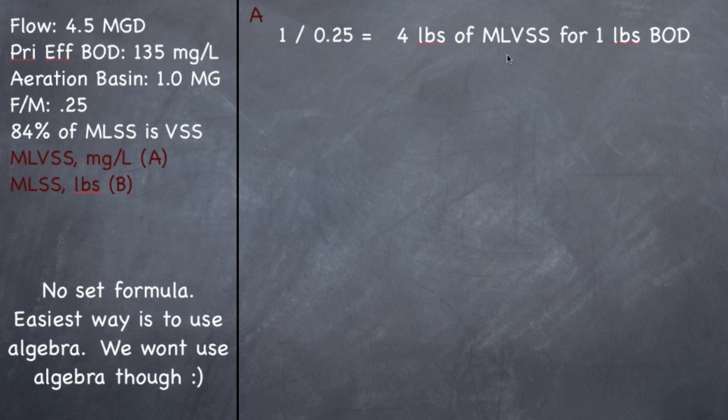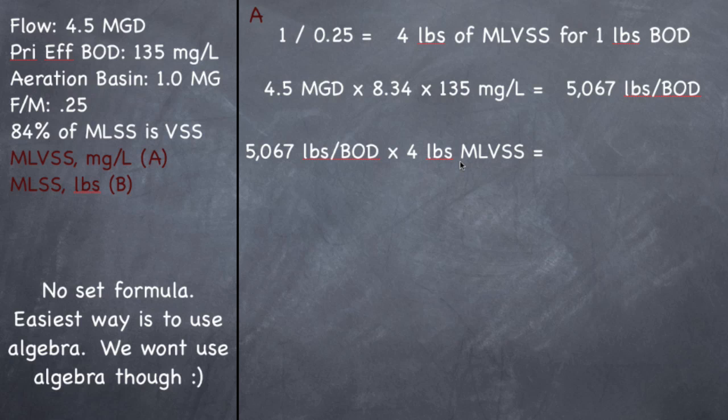So let's go ahead and do that simple pounds formula. 4.5 MGD times 8.34 times 135 milligrams per liter, primary effluent BOD. Always remember that primary effluent BOD, it's what's going to the aerator. Should give you 5,067 pounds of BOD. So I have 5,067 pounds of BOD. For every pound of BOD I have, I have 4 pounds of MLVSS. So let's multiply 5,067 by 4 to get how many pounds of MLVSS I have in the aeration basin.